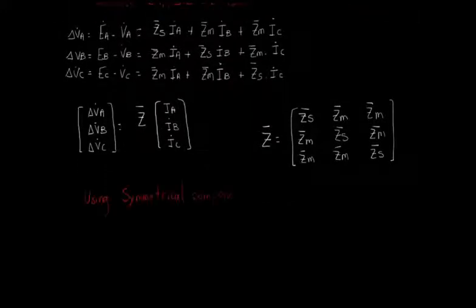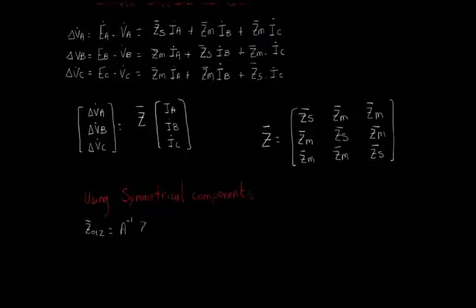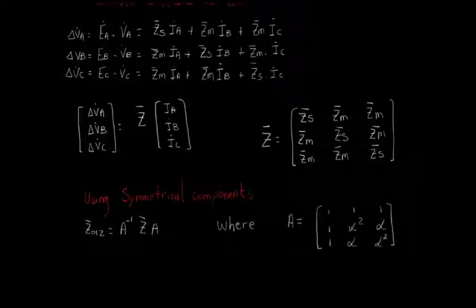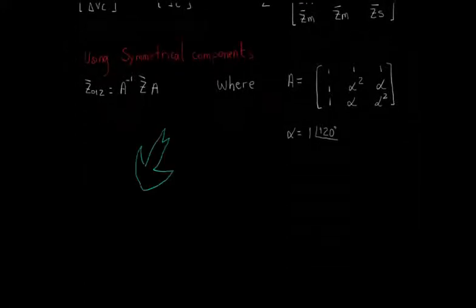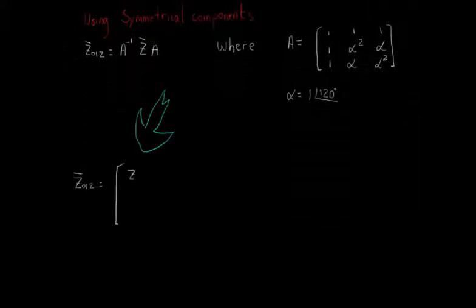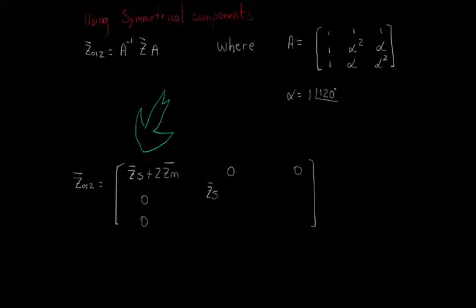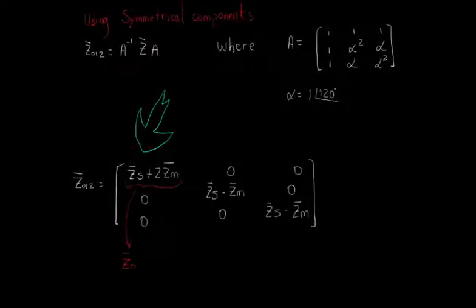Now, applying symmetrical components to Z bar, we know that Z012 is equal to the inverse of A times Z bar times A, where A is the famous transformation matrix, and alpha is a complex number with a unit module and a phase of 120 degrees. By doing this matrix multiplication, we will get a diagonal matrix like the following, where the first element is called Z0 or zero sequence impedance, the second one is called Z1 or positive sequence impedance, and the last element is called Z2 or negative sequence impedance.